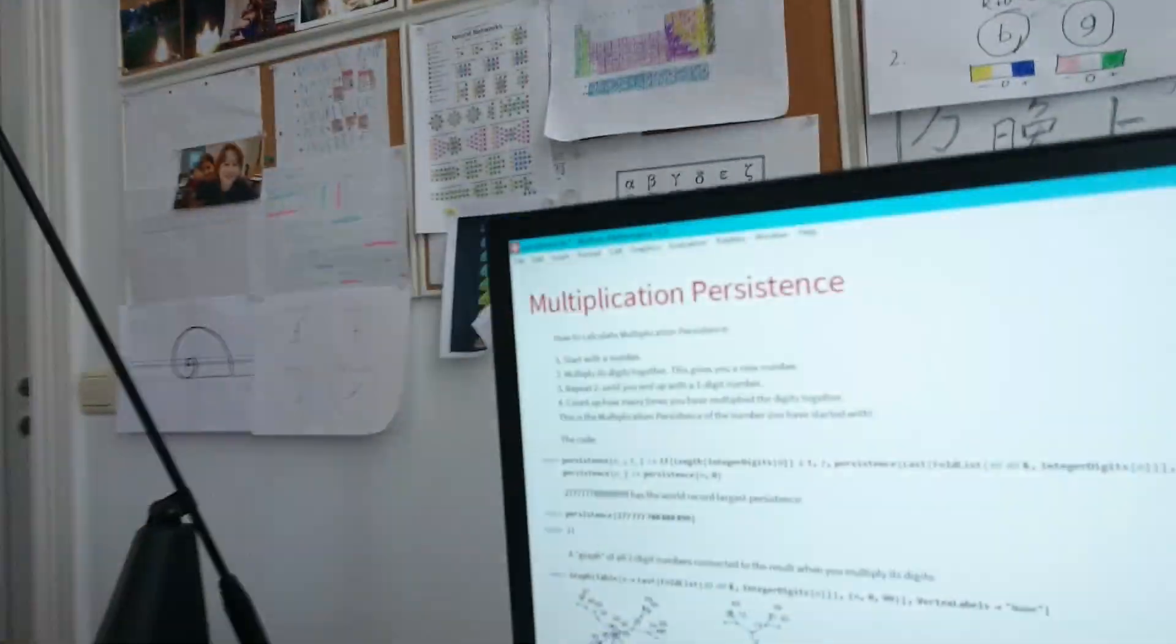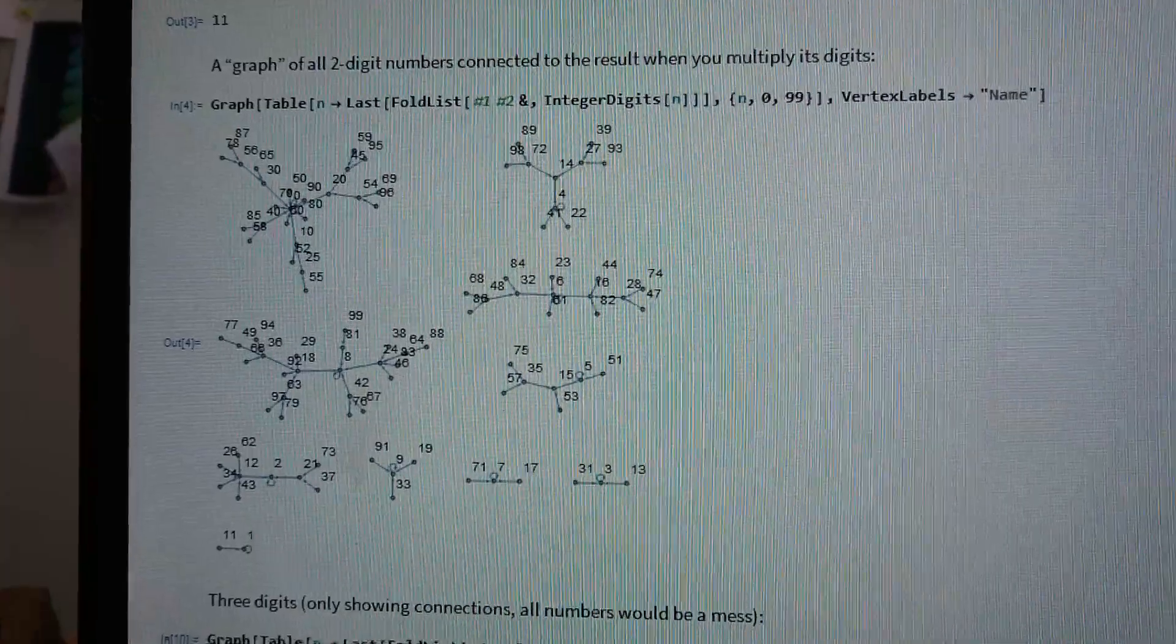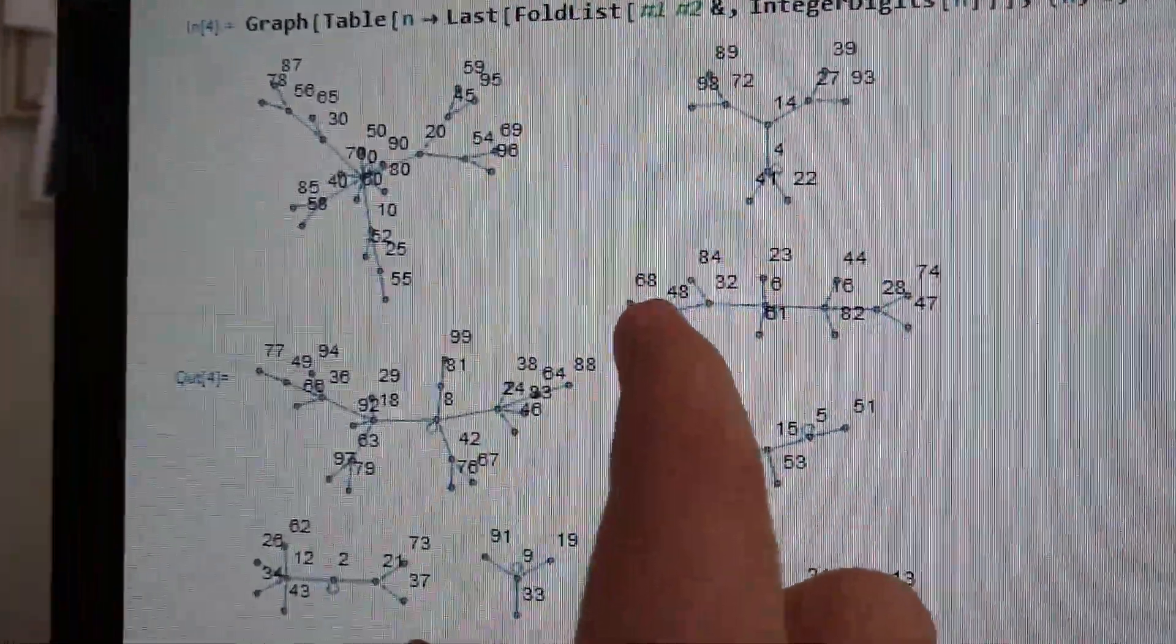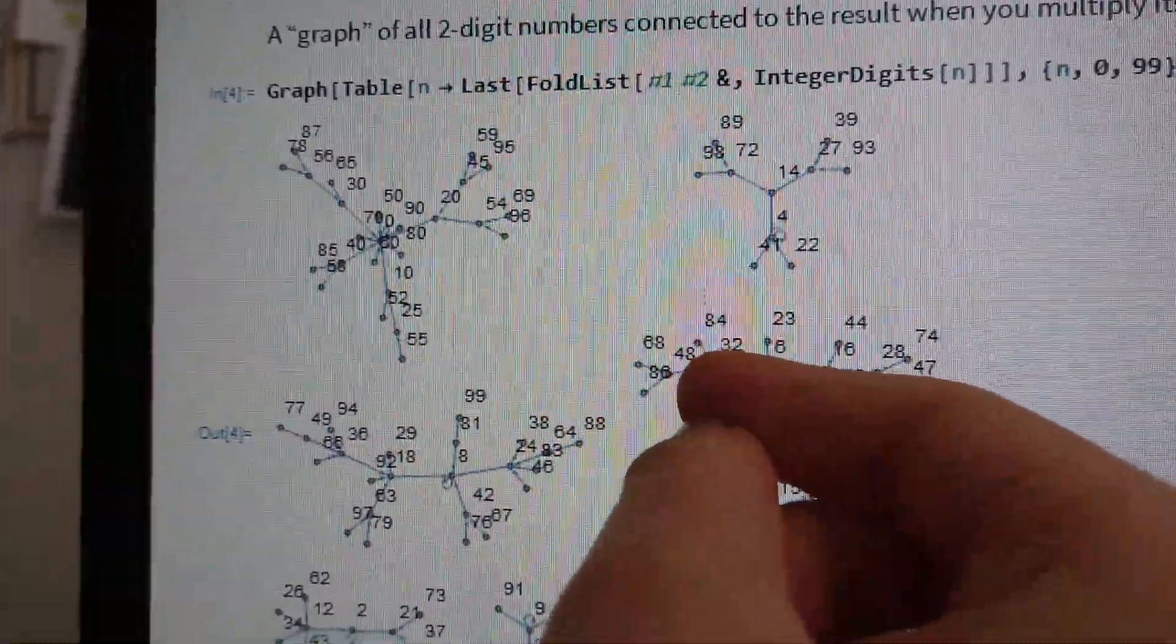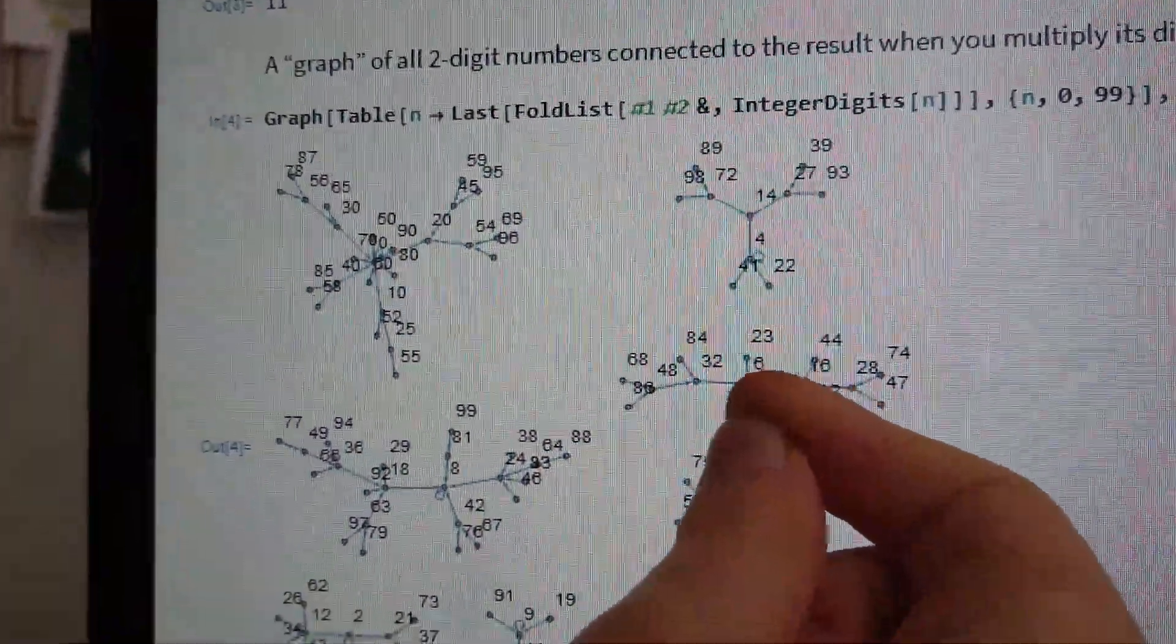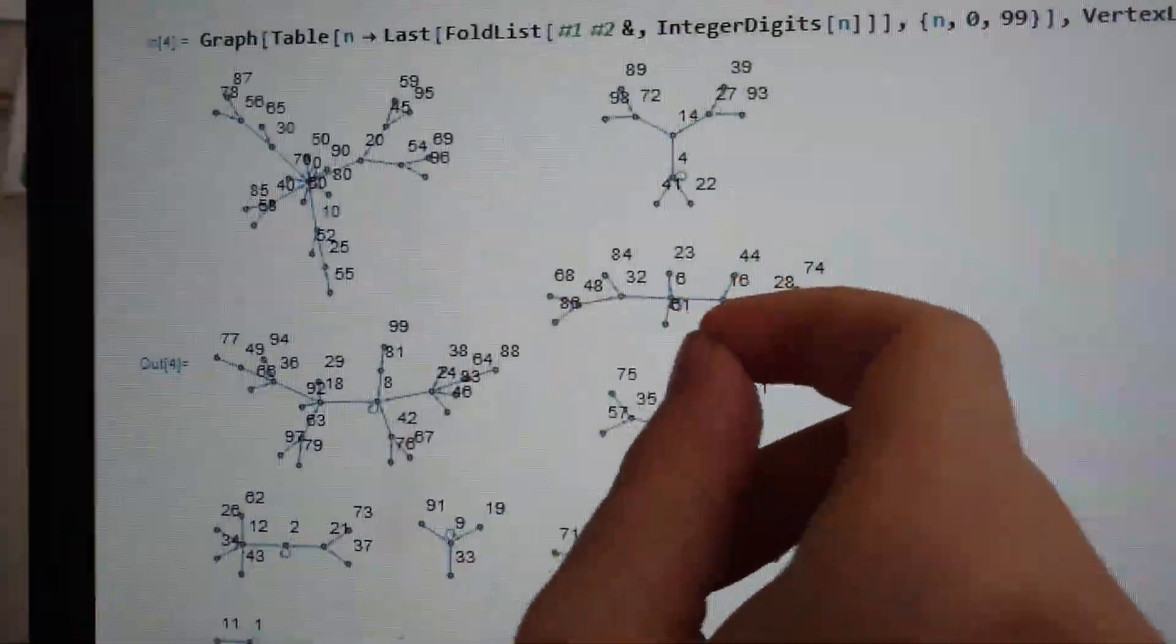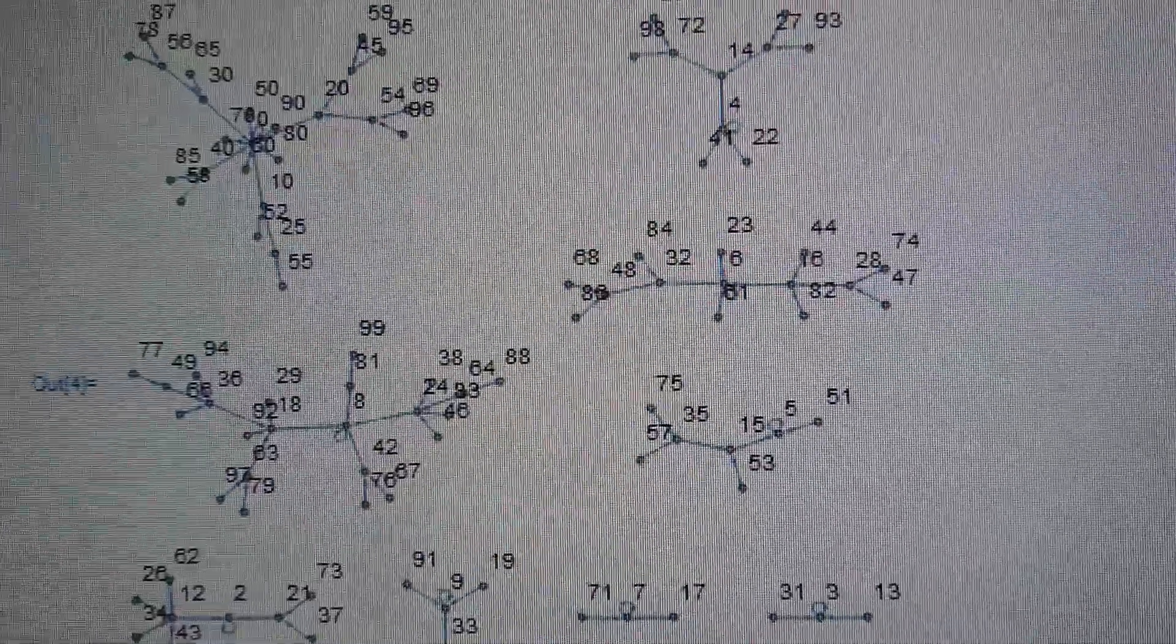This is all of the two-digit numbers. This is a graph of all of the two-digit numbers. So those are the vertices. And then they're connected to the result when you multiply the digits. So 8 times 6. And that goes to 48. So 8 times 6 is 48. So then it connects to 48. Like this.